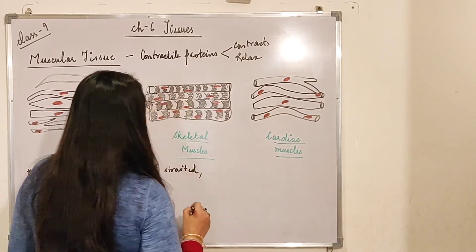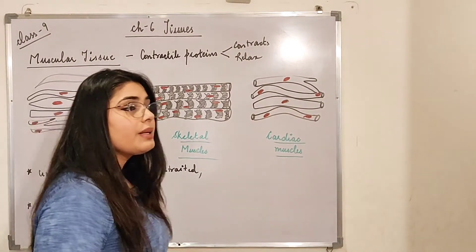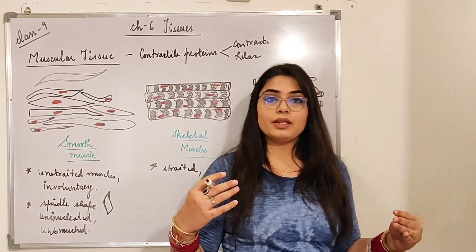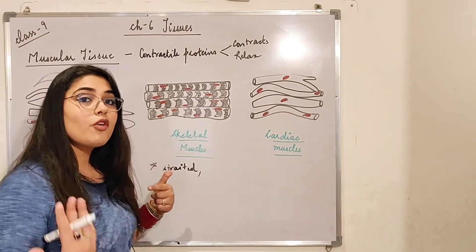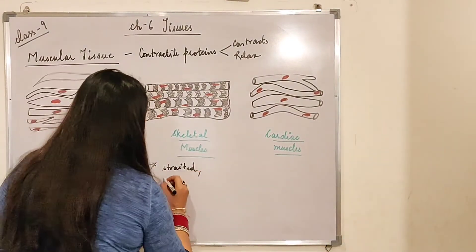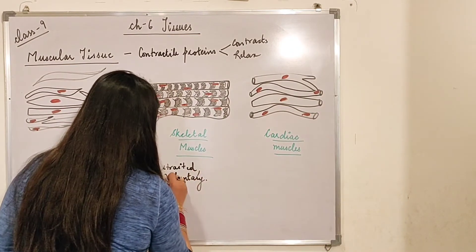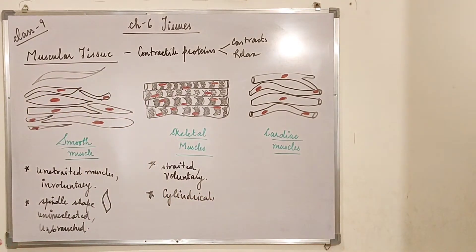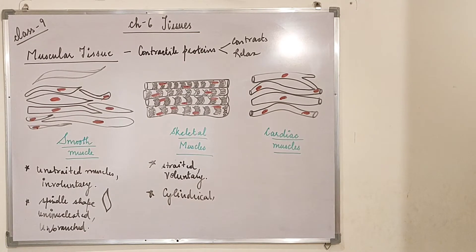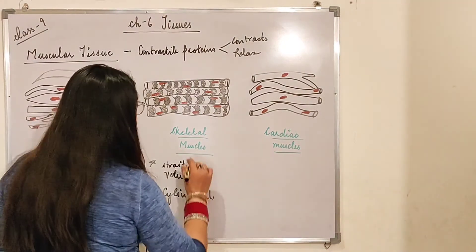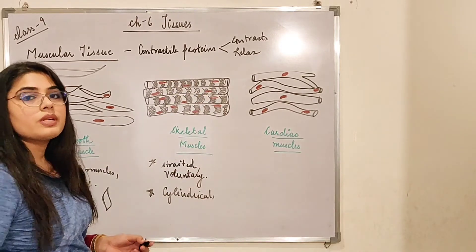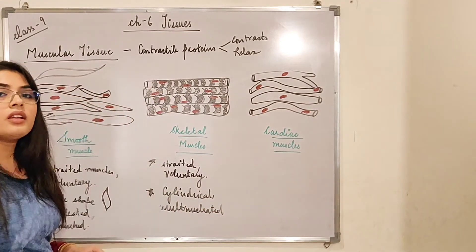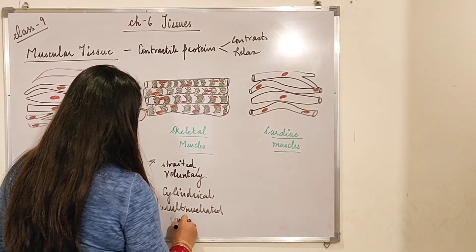Are skeletal muscles voluntary or involuntary? Skeletal muscles are connected to our legs and arms. If I want to move my hand, I can move it — it doesn't move automatically. So they move according to our willpower, making them voluntary in nature. The shape is cylindrical, as you can see. They are also multinucleated — in one cylindrical structure you can see three nuclei. And they are unbranched, with no branches present.